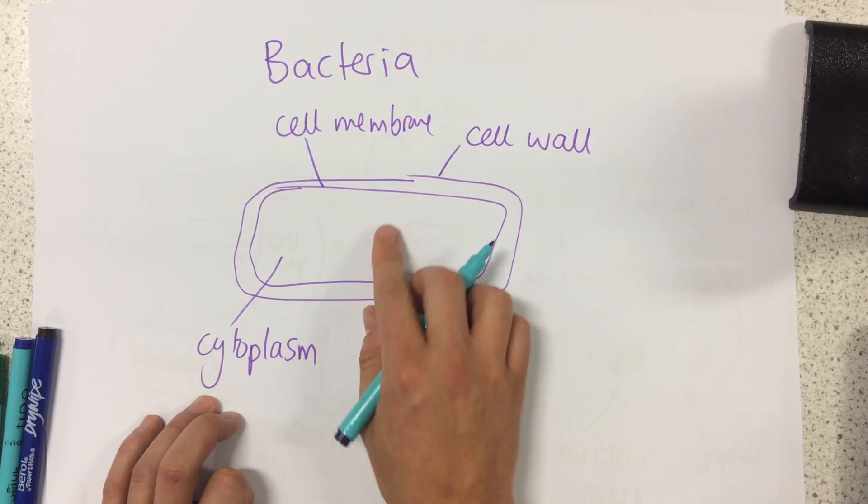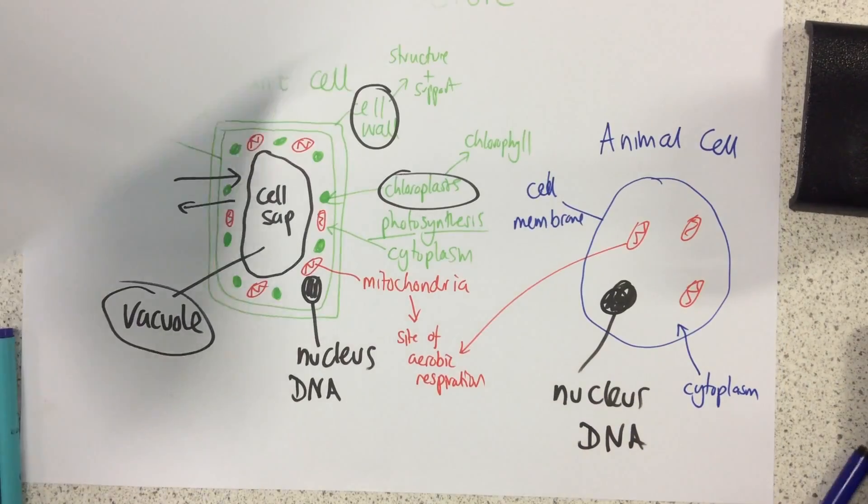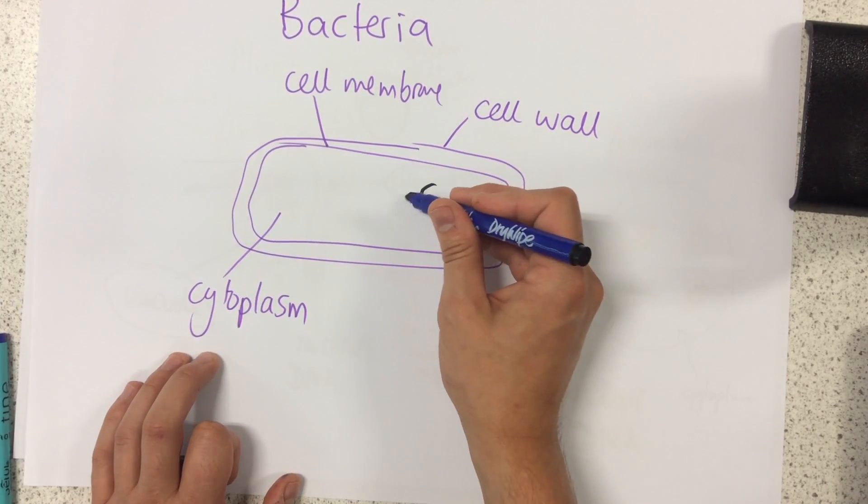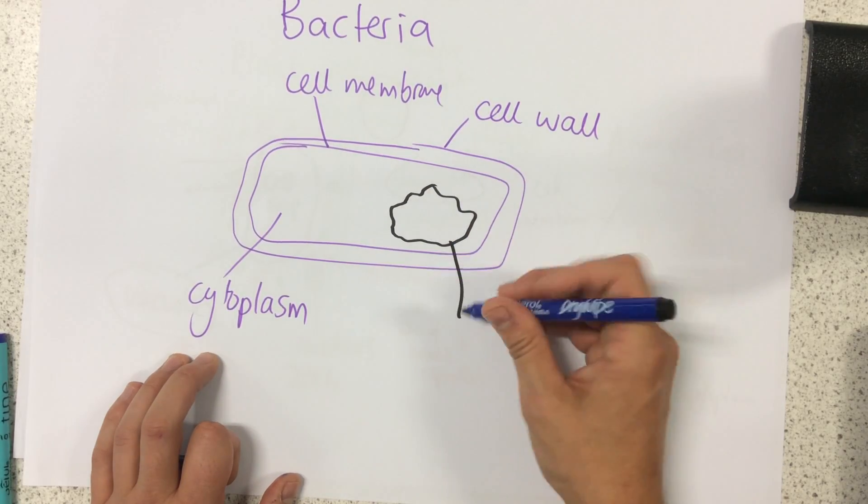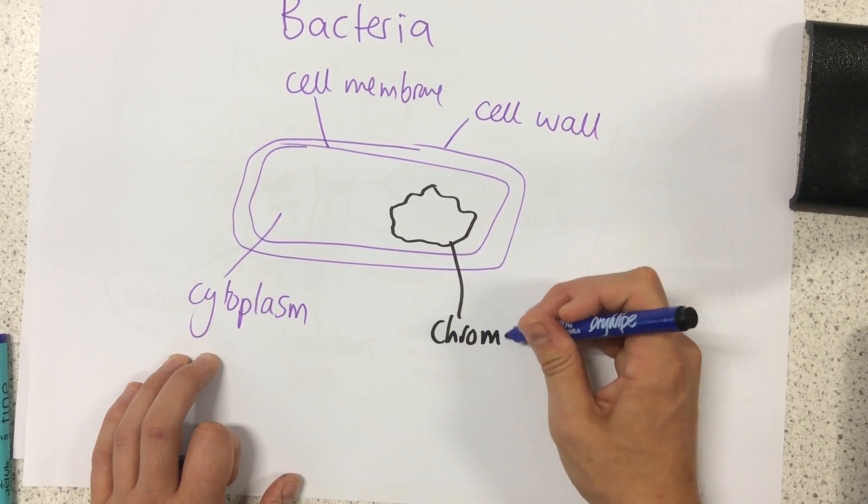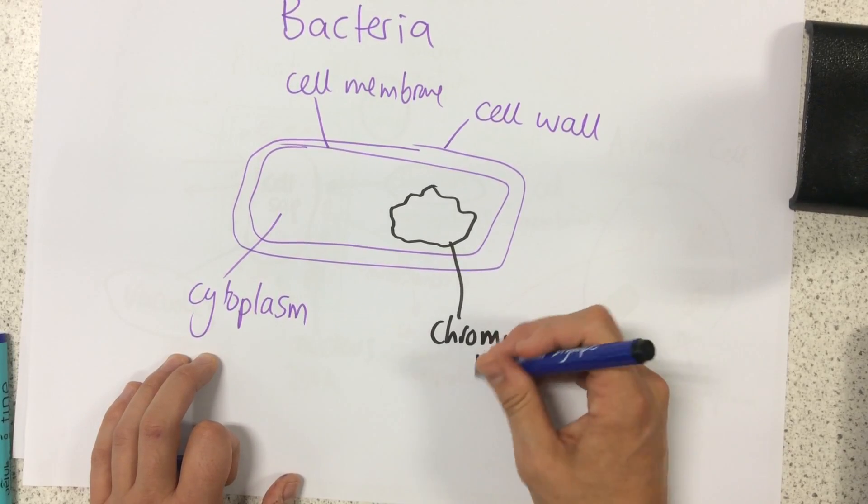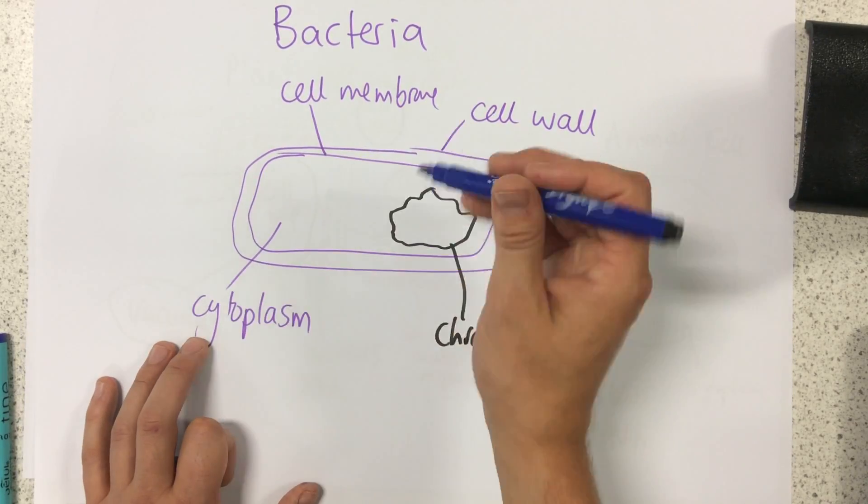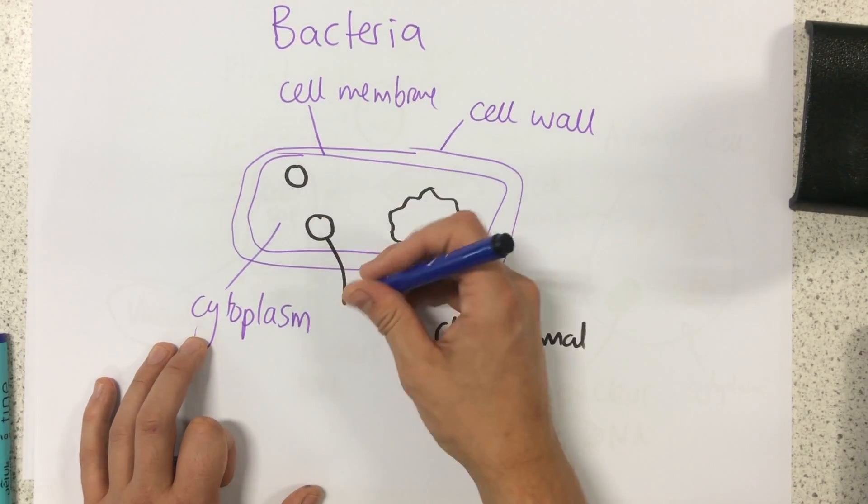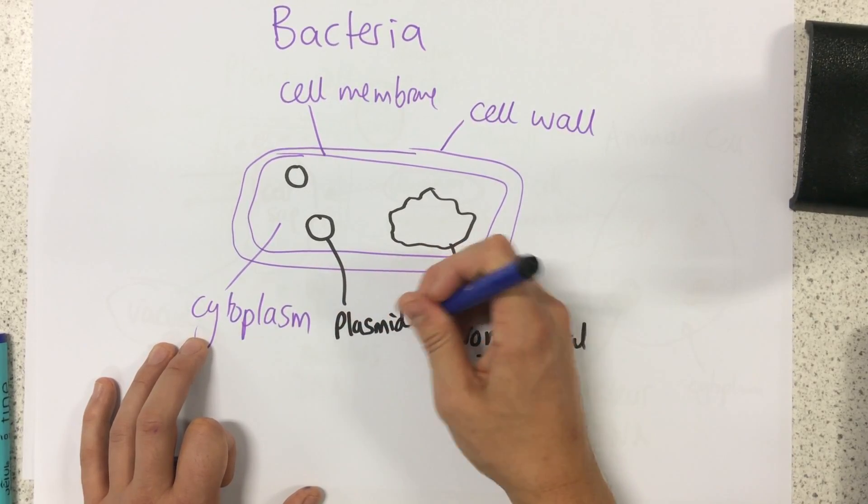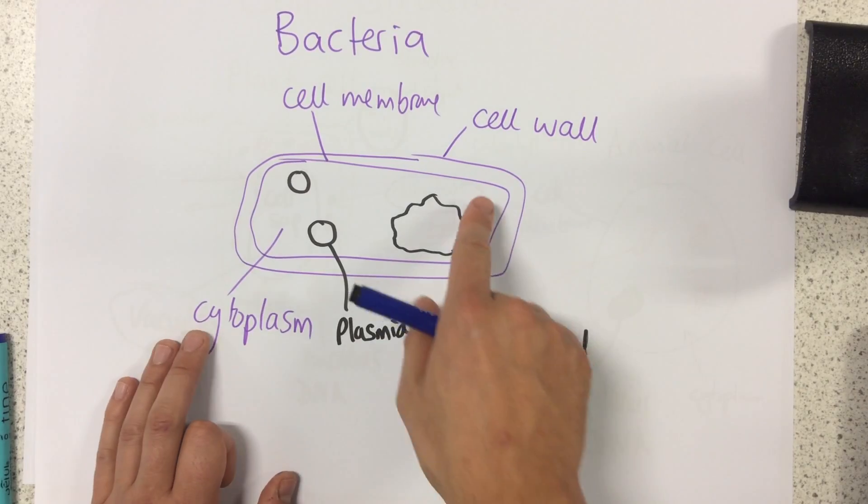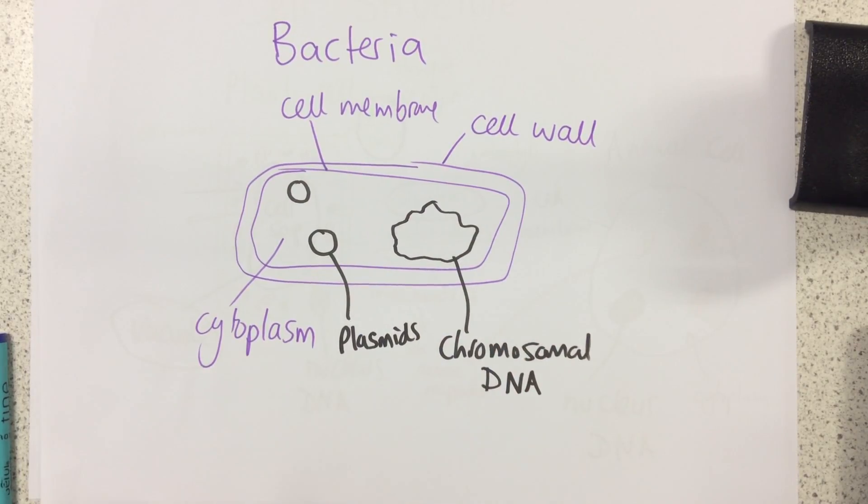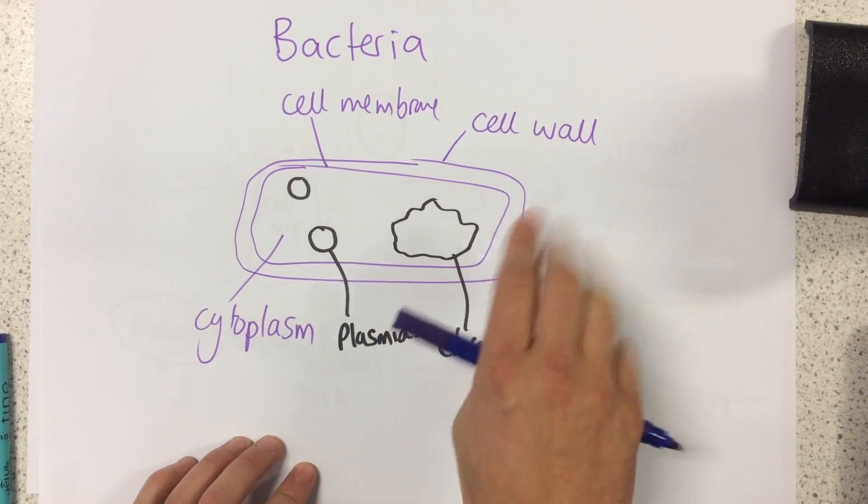However instead of having a nucleus, remember both of the other two had a nucleus where the DNA is stored, they've actually got this long circular chromosome which is called chromosomal DNA. Now this is just where all of the genetic information is stored here and also in these things called plasmids. Now these plasmids are just simple circles of DNA. Notice how it doesn't have any mitochondria. It also doesn't have a vacuole. It also doesn't have chloroplasts.